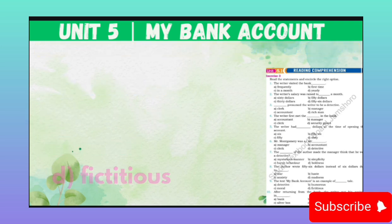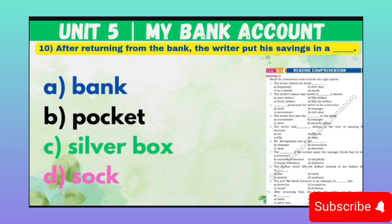MCQ number 10, the last MCQ from unit number 5, 'My Bank Account' written by Stephen Leacock from English book 1 for first year classes: After returning from the bank, the writer put his savings in a blank. It means bank se wapas aane ke baad musannif ne apni bachat kis mein rakh di. Option A: Bank. Option B: Pocket. Option C: Silver box. Option D: Sock. Correct option is D — Sock.